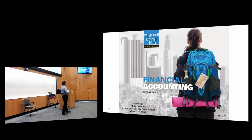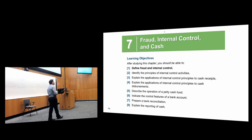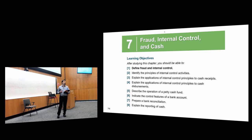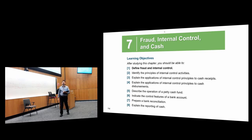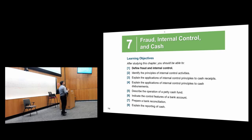Now in this chapter, we will talk about cash and controls. A lot of companies and people are interested in cash because cash is money — and it's easy to steal. It's easier to steal money than it is to steal, for example, a TV. Companies are very concerned about fraud related mostly to cash, because cash is one of the easiest types of assets that can be stolen, embezzled, or hidden.